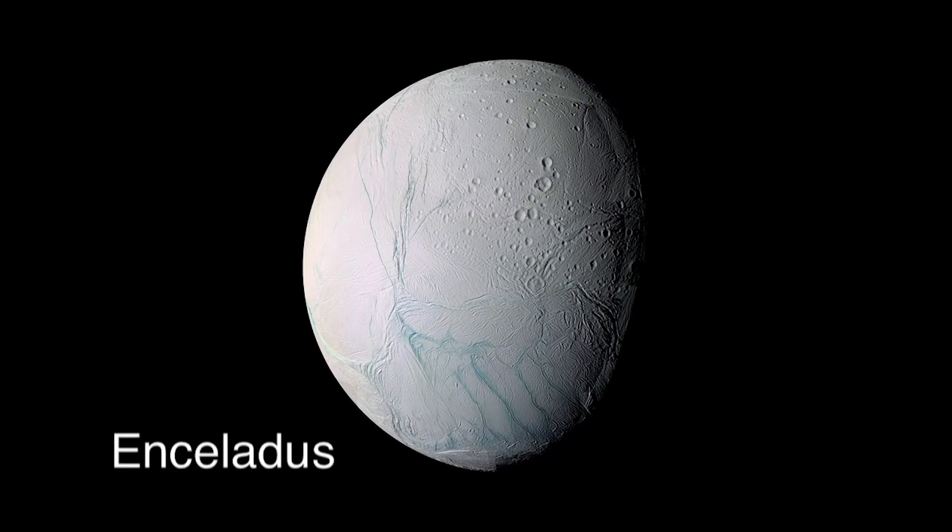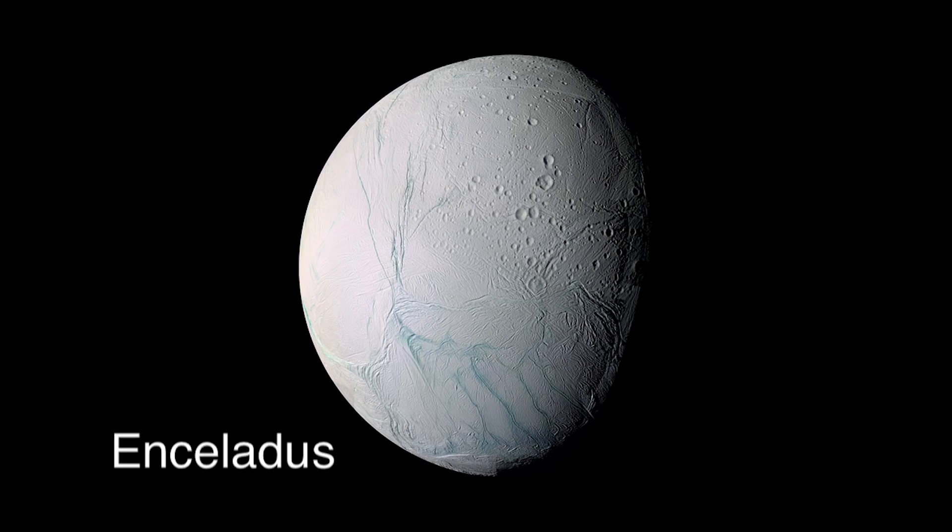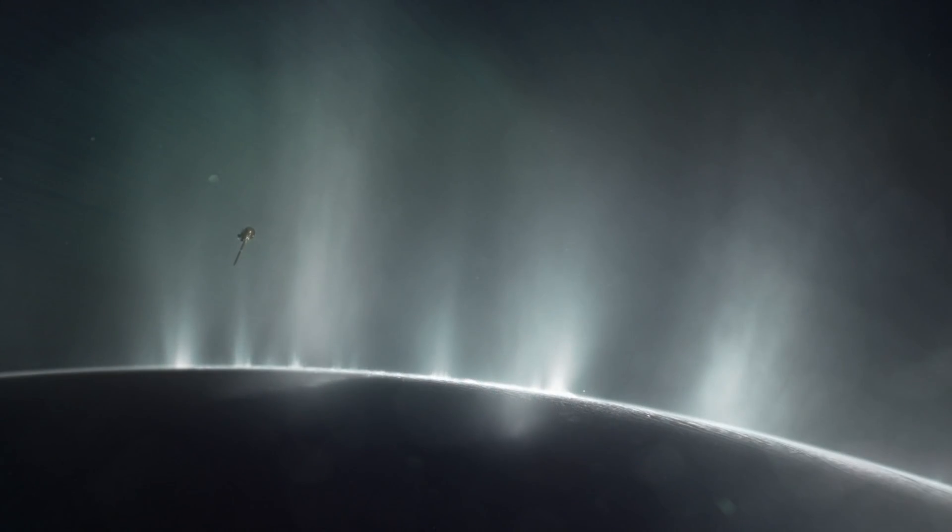So, some really amazing science before we take this final plunge into Saturn. And let's remember why we're doing that. Why are we flying the spacecraft into the planet? It's to protect the moons of Saturn. For example, Enceladus, this great moon that has an ocean underneath the surface. It might just be this cozy little place for microbes to live.